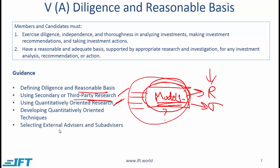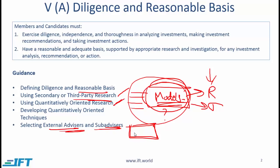At times you might have a need to use external advisors and sub-advisors. Before engaging these companies or individuals, you need to review the advisor's established code of ethics, understand the advisor's compliance and internal control procedures, assess the quality of published return information related to the advisors and sub-advisors, and review your advisor's adherence to stated strategy. For example, if an advisor claims to focus on a particular area, you need to verify whether they have indeed focused on that strategy.